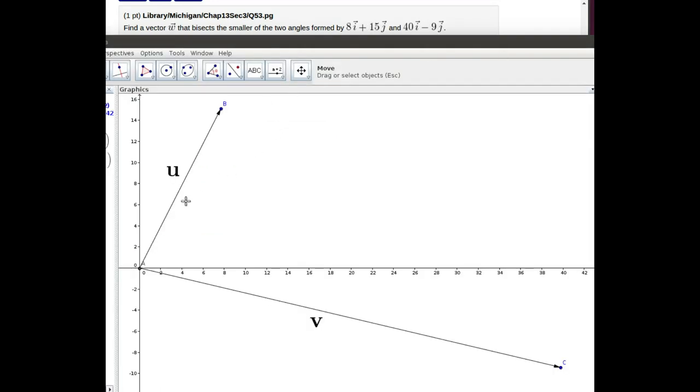Here I've drawn an approximation of each of these vectors called the first vector u and the second vector v. The u vector goes over 8 and up 15 and the vector v goes over 40 and down 9.